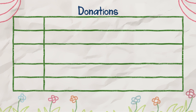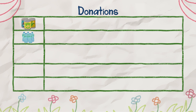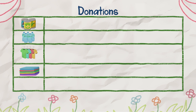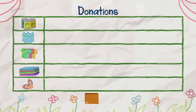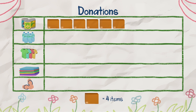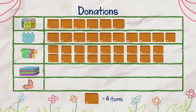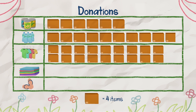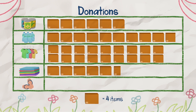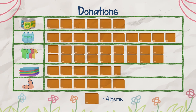We should put the items that we donated on this side. We donated canned goods, bottled water, clothes, blankets, and slippers. We donated 24 canned goods, 39 bottles of water, 72 pieces of clothes, 22 blankets, and 24 slippers. There! That's the pictograph of our donations.